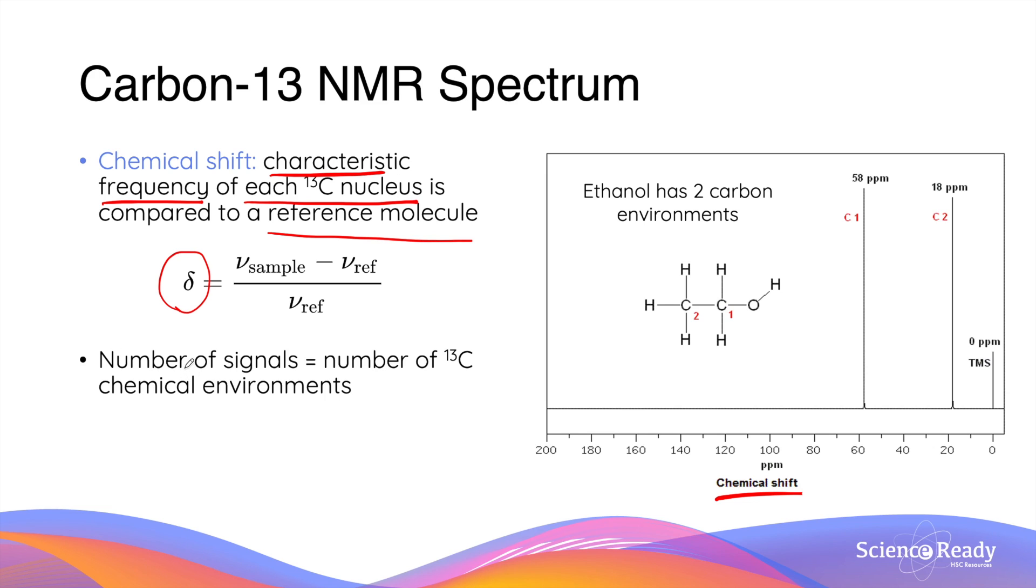The very first thing you need to understand is that in a carbon-13 NMR spectrum the number of signals excluding the reference molecule is equal to the number of carbon-13 chemical environments there are in the molecule.